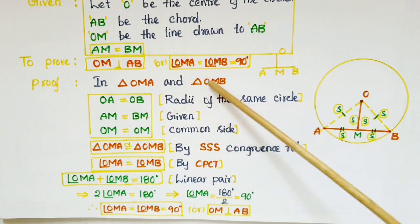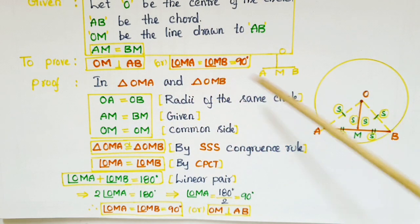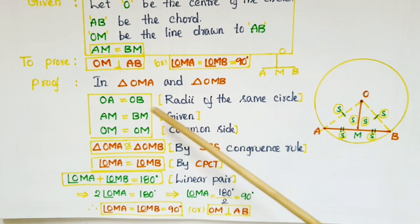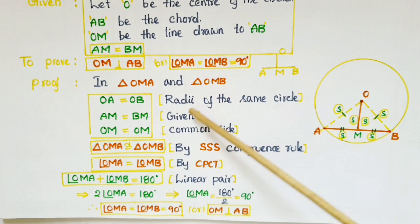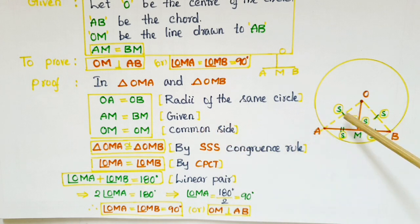Take these two triangles, triangle OMA and triangle OMB. OA is equal to OB because these two are radii of the same circle and AM is equal to BM. This is given in the problem and OM is equal to OM. This is the common side of these two triangles.